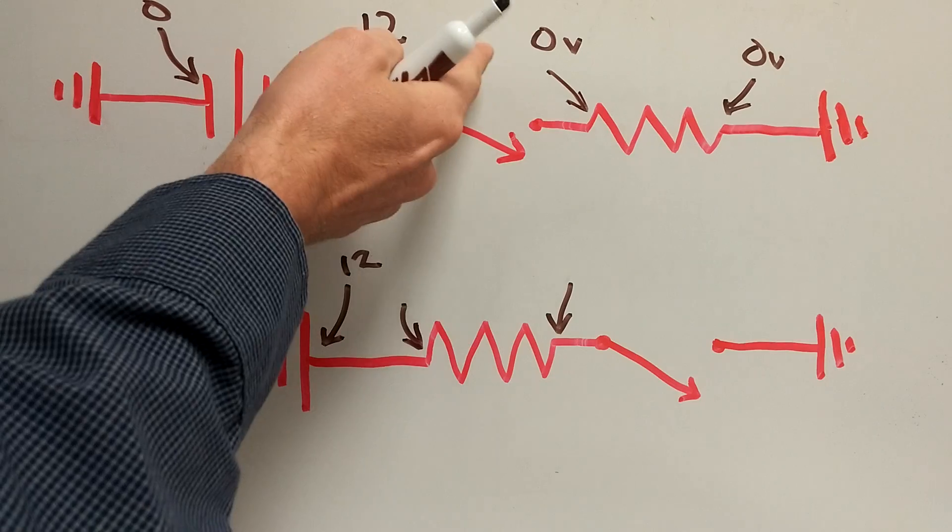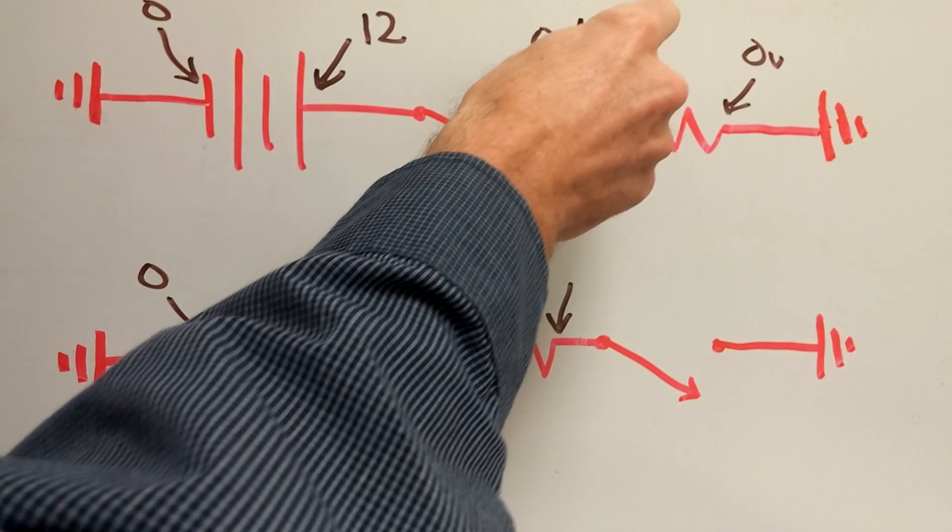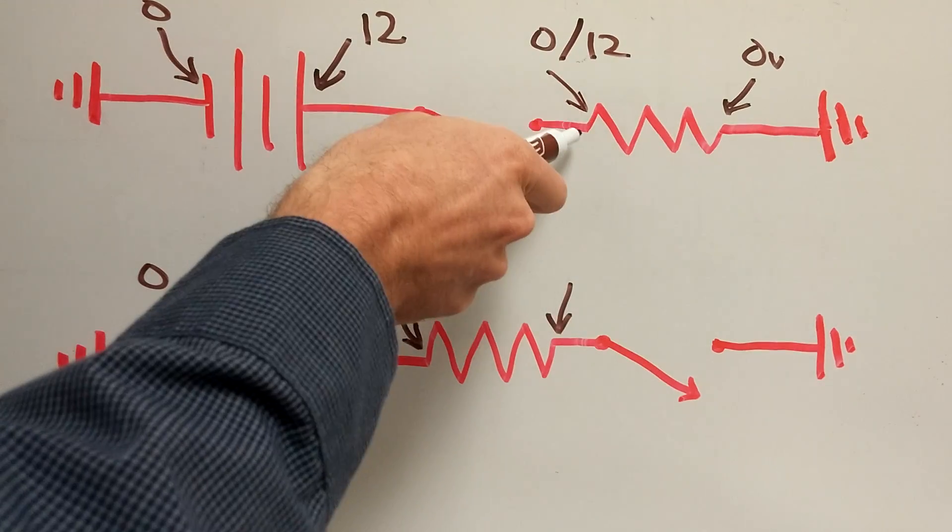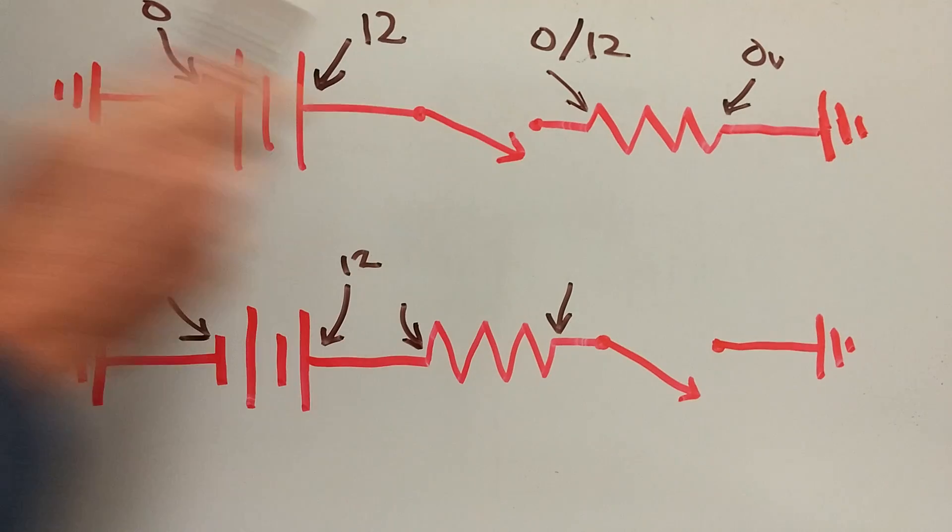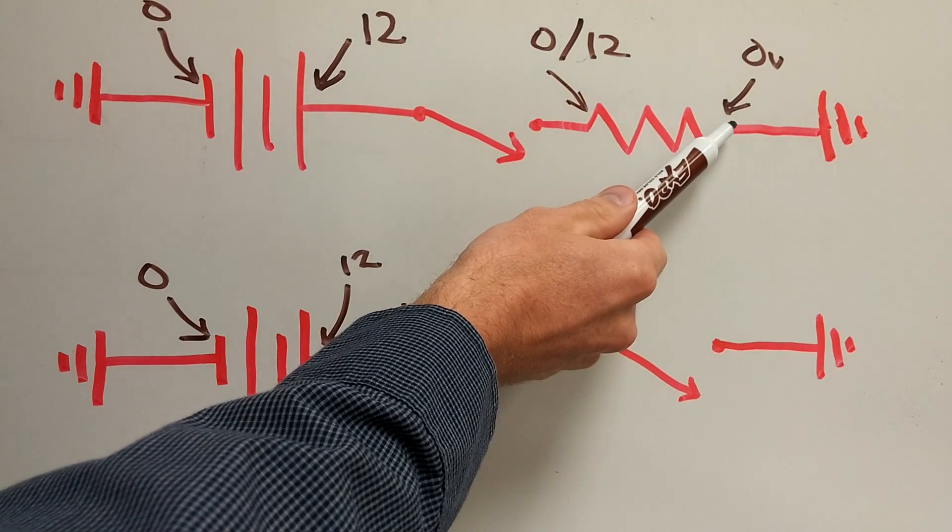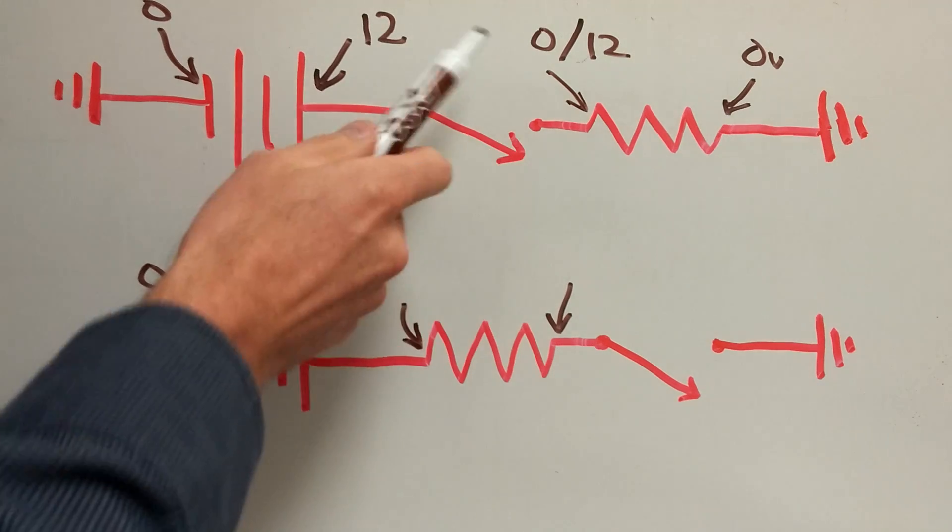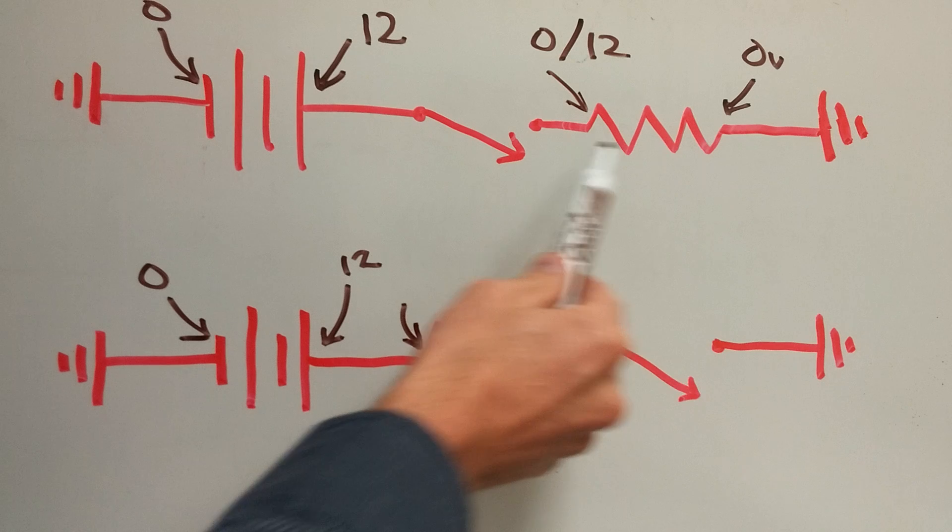But when the switch closes, now we'll suddenly have 12 volts. So this is 0 volts when it's open and 12 volts when the switch is closed. This side, however, is always 0 volts. When the switch closes and current begins to flow through the resistor, all 12 volts should be dropped across that resistor.